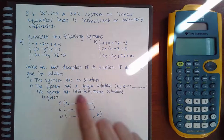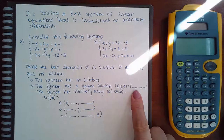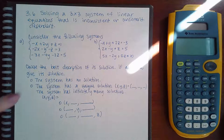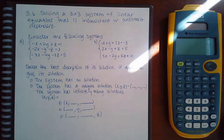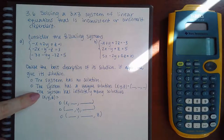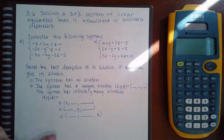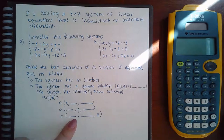The most involved case is that last one because there are three options for it. You already know what it looks like when you have a unique solution — that's when you can find x, y, and z. If you get no solution, all of your variables will wipe out and you'll be left with a false equation like zero equals five. For infinitely many solutions, your variables all cancel and you end up with zero equals zero, which is a true statement.